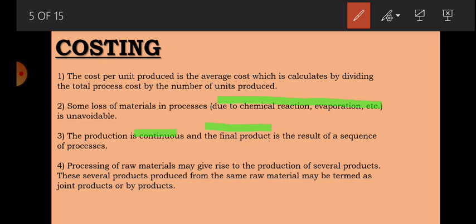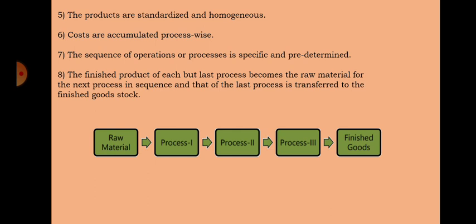Number four: processing of raw material may give rise to the production of several products. When we put raw material into processing, some extra products can be produced. Several products produced from the same raw material may be termed as joint products and by-products. Number five: products are standardized and homogeneous in nature. Number six: costs are accumulated process-wise — we sum up how much cost was incurred in each process.